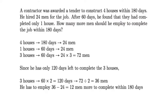For this question, it's more like a common-sense question. The contractor was awarded a tender to construct 4 houses within 180 days and he hired 24 men. So this is what he was supposed to do.